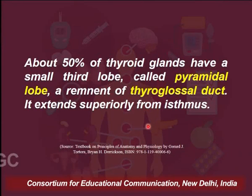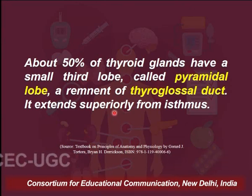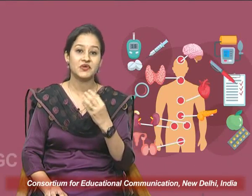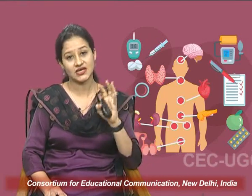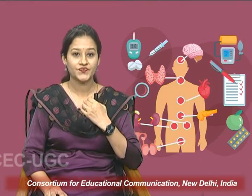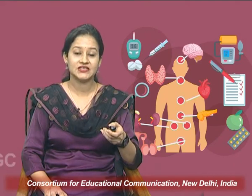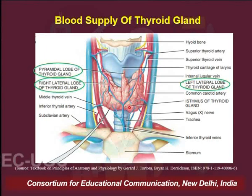Interestingly, about 50% of glands have an additional lobe called the pyramidal lobe. This lobe is actually a remnant of the thyroglossal duct, which is found at the time of embryonic development. During embryonic development, this gland remains connected to the windpipe with the help of a thyroglossal duct. In 50% of cases, this duct remains and can be seen as a third lobe lying superior to the isthmus — this is what is called the pyramidal lobe. You can see in the figure the left and right lobes and on the superior side of the isthmus the pyramidal lobe of the thyroid gland.